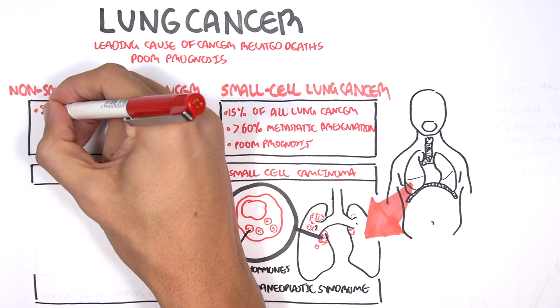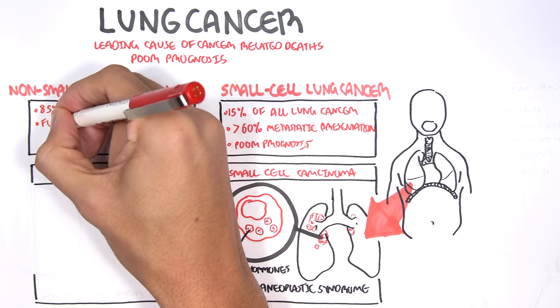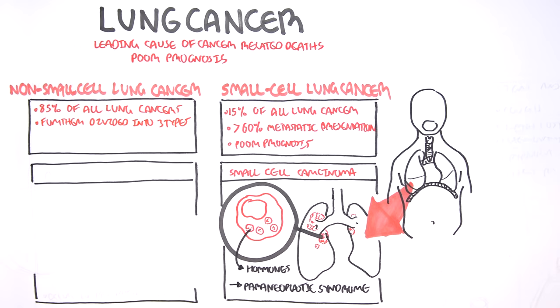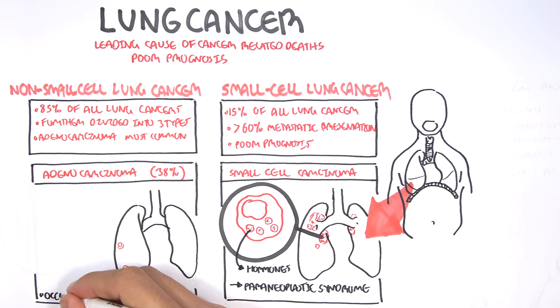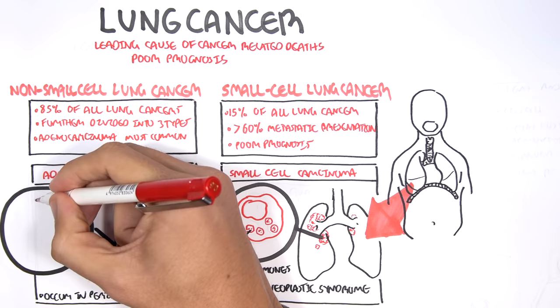Non-small cell carcinomas represent the majority of lung carcinomas, 85%. Non-small cell carcinoma is further divided into three types. Adenocarcinoma is the most common type of non-small cell carcinoma. Adenocarcinomas make up 38% of lung carcinomas. These types of cancers tend to occur in the peripheral lung tissue, away from the hilum, and involve glands within the lung.